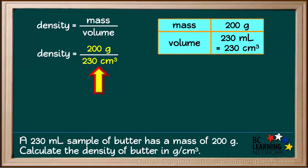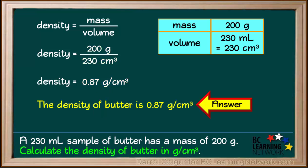So the density is 200 grams divided by 230 cubic centimeters, which comes out to 0.87 grams per cubic centimeter, or 0.87 grams per centimeter cubed. So the answer to this question is the density of butter is 0.87 grams per cubic centimeter.